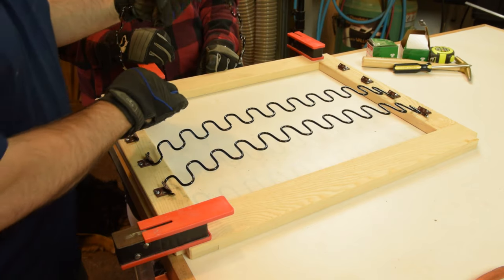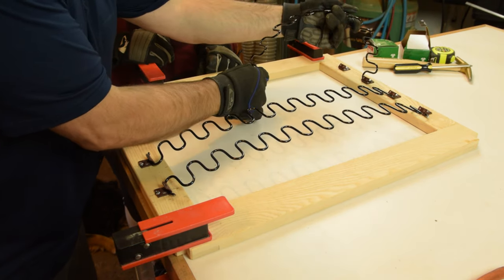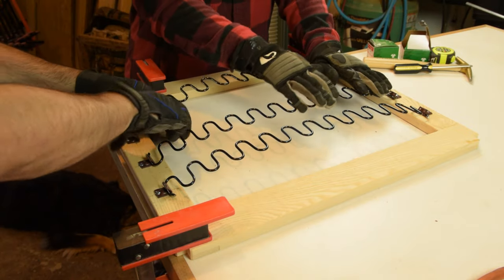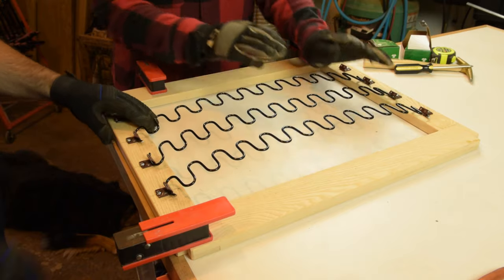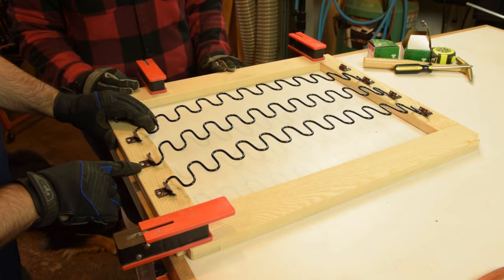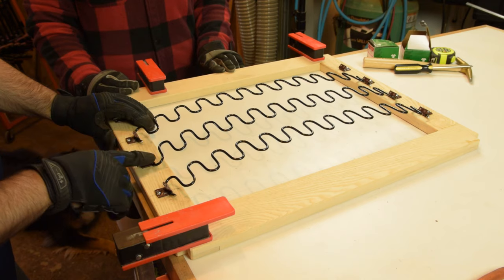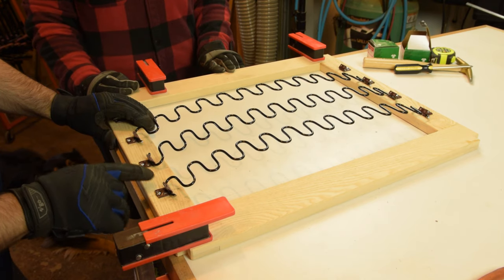Once you have the ends formed on your zigzag springs, it helps if you have two people. You just want to apply some pressure and stretch them down over your clips. Here we have those mounted with a single screw so far, and then we'll add long upholstery tacks to anchor everything down.